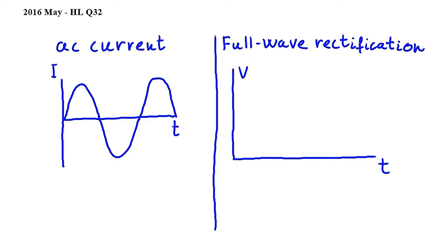We are told in the question that the period of the input signal, or in other words, the period of the AC current, is 6.3 milliseconds. So this distance on our graph here is 6.3 milliseconds.